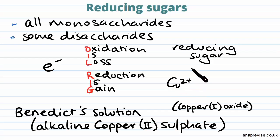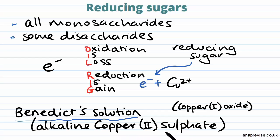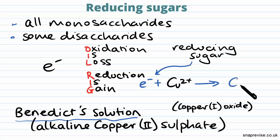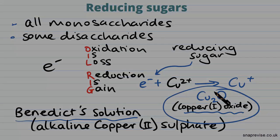Reducing sugars reduce other things by providing them with electrons so that they can gain them. There's no better way of testing whether a sugar is reducing than by giving it something to reduce — and this comes in the form of Benedict's solution, which is essentially alkaline copper(II) sulfate. Because it contains copper 2+ ions, if there's a reducing sugar present, electrons can be gained by the Cu²⁺, forming Cu⁺, which then forms Cu₂O (copper(I) oxide) in solution.